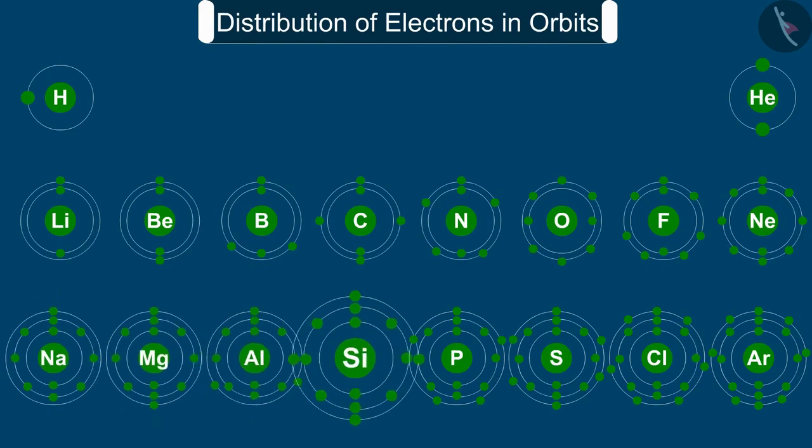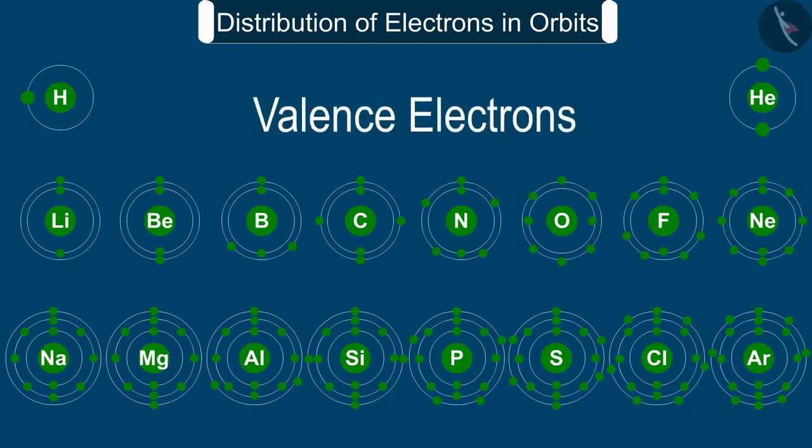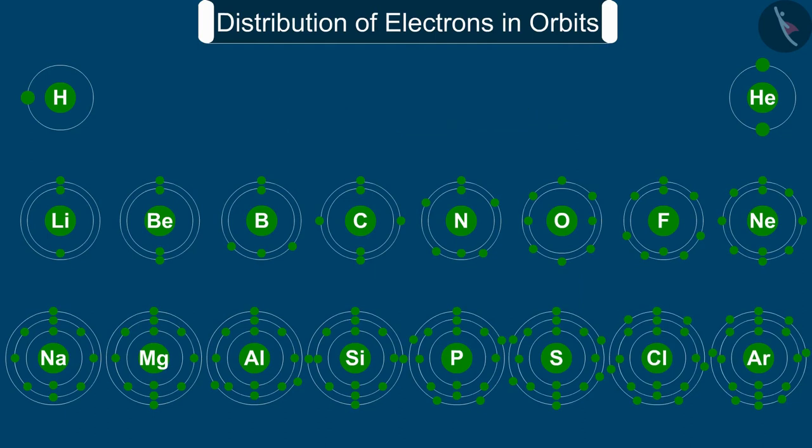The electrons present in the outermost shell of an atom are known as the valence electrons. We also know that the outermost shell of an atom can accommodate a maximum of 8 electrons.